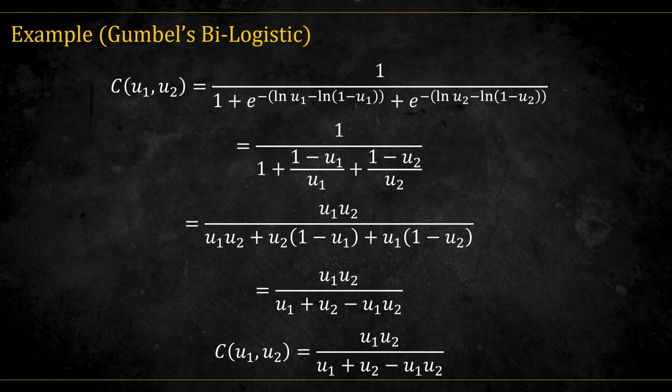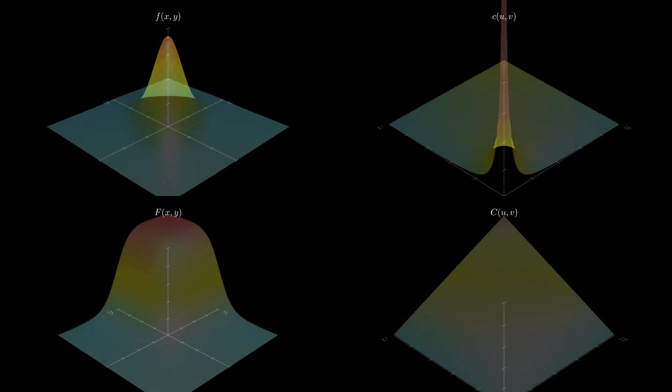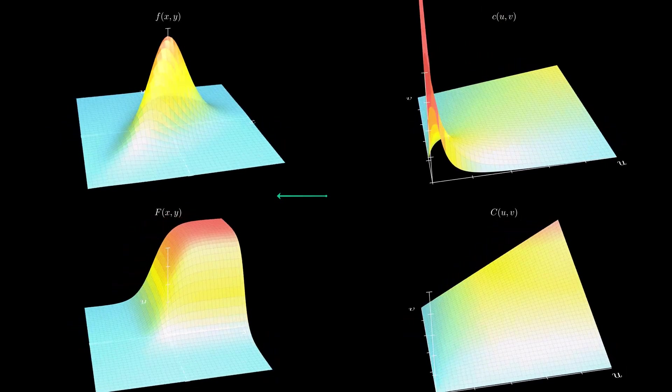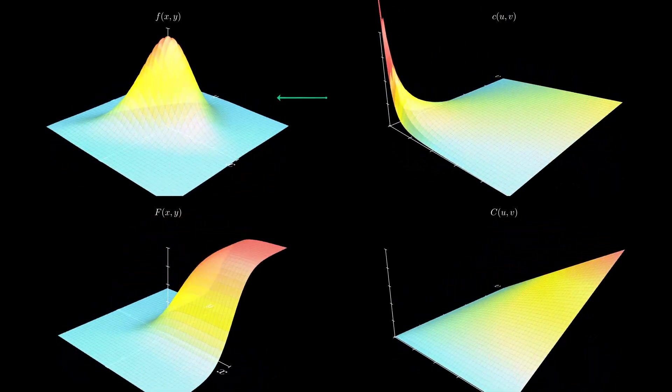Now that we have a copula, we need to distinguish between two worlds, the variable space and the copula space. In variable space, we work with the original random variables, say x1 and x2. The PDF looks like this surface.